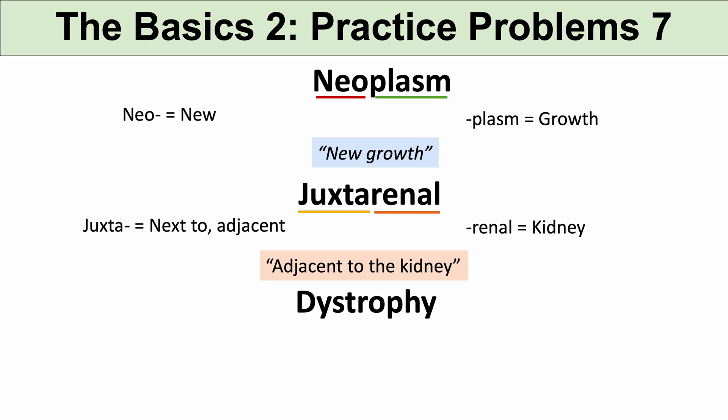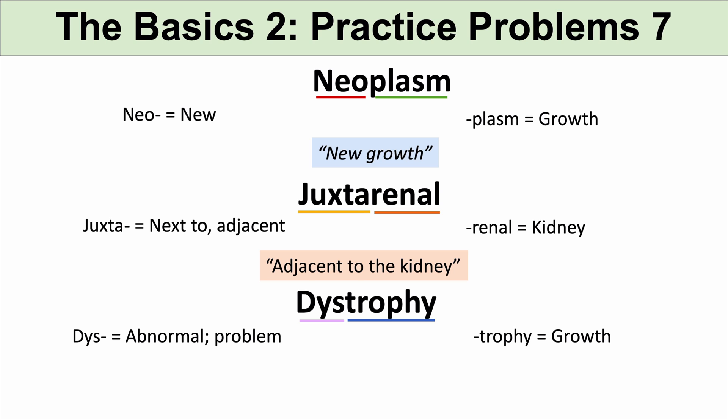The last practice problem is dystrophy. Dys means abnormal or some problem. And the suffix trophy means growth — often a cellular growth, meaning growth in size not number. So dystrophy means an abnormal cell growth.